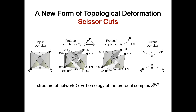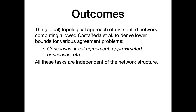One of the main contributions of Castañeda et al. was to identify a new form of topological deformation called scissor cuts. For instance, in consensus one can see two types of scissor cuts depending on the network structure. A key contribution is establishing a correspondence between the structure of the network G and the homology of the protocol complex Pt. This result enables them to derive lower bounds for various agreement problems, such as consensus, k-set agreement, and approximate consensus.